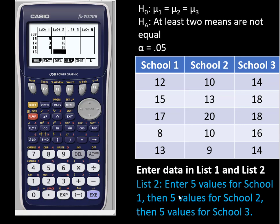So to recap what we just did, for list 2 we entered the five values for school 1, then the five values for school 2, and then the five values for school 3. Now we'll run ANOVA.